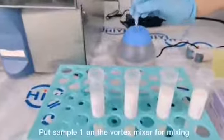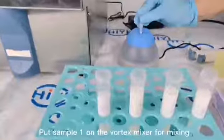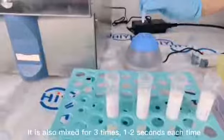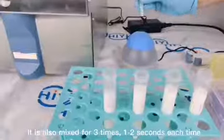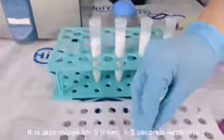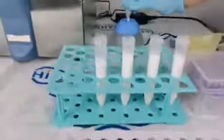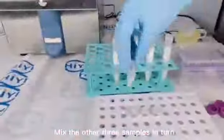Put sample one on the vortex mixer for mixing. It is also mixed for three times, one to two seconds each time. Mix the other three samples in turn.